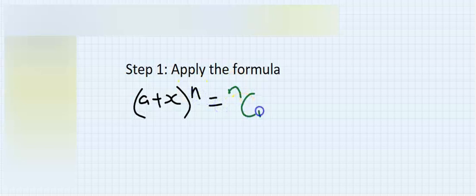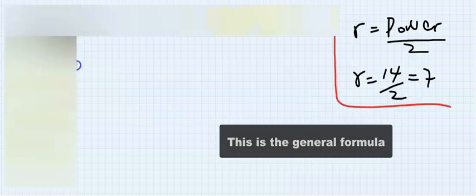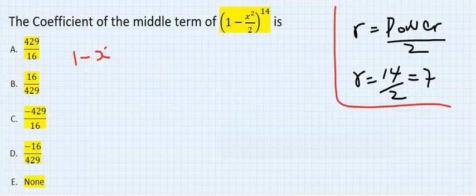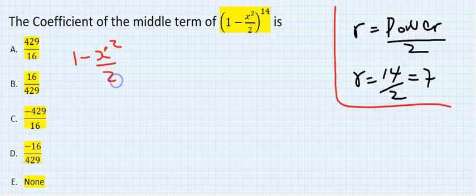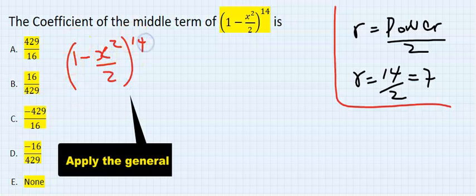Apply the formula: (a + x) to the power of n gives us nCr times a to the power of (n - r) times x to the power of r. We have (1 - x²/2) everything to the power of 14.